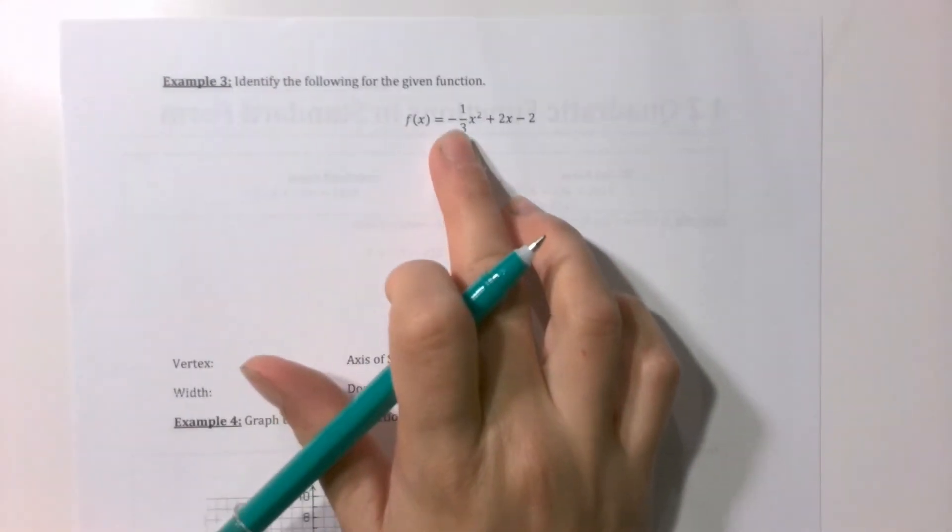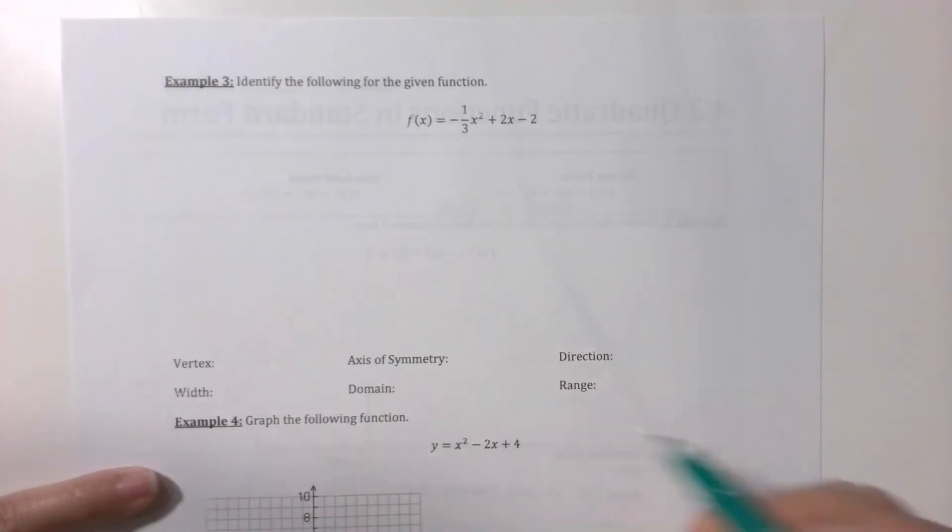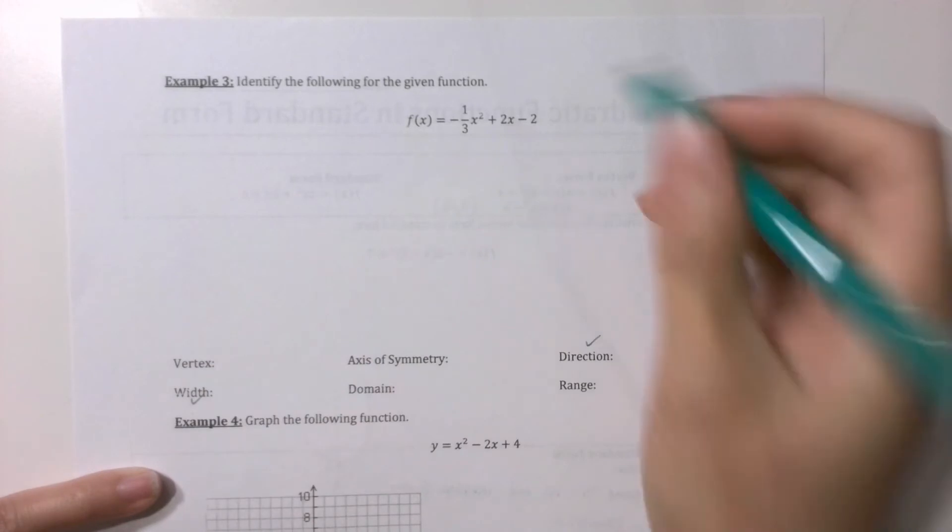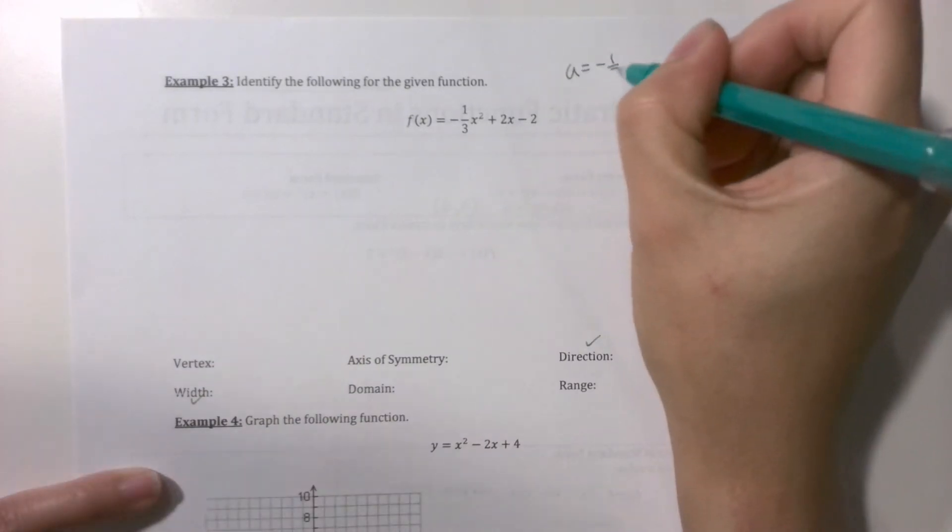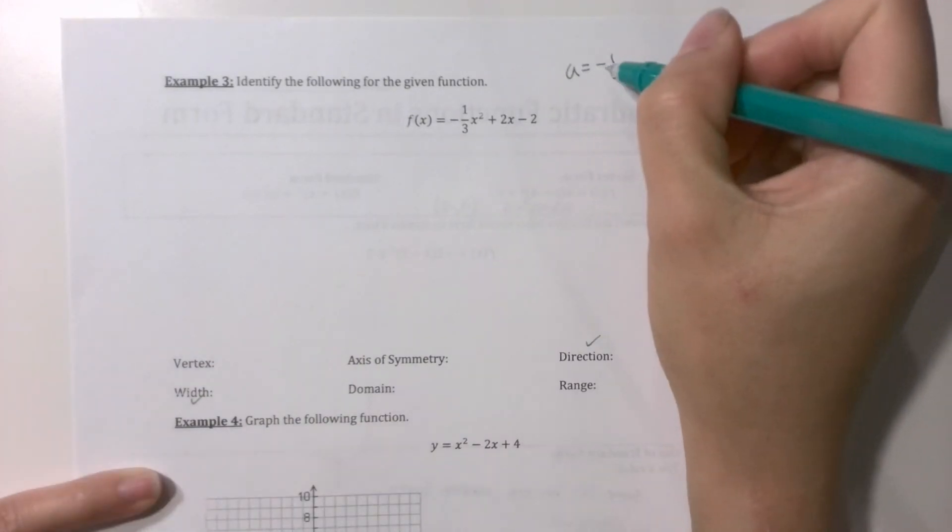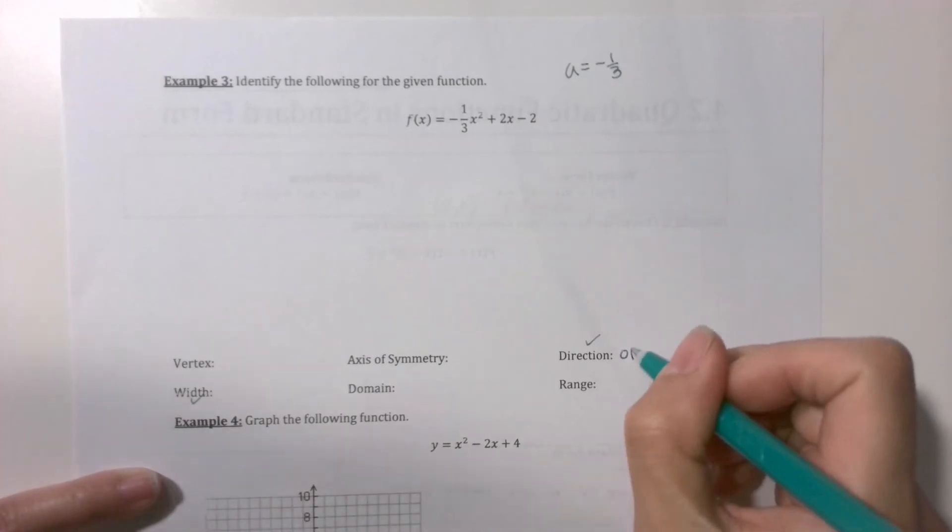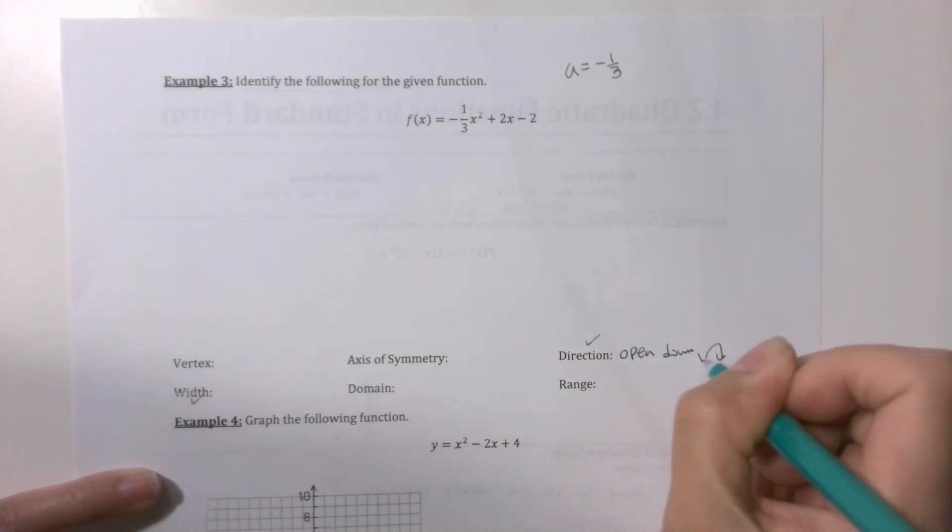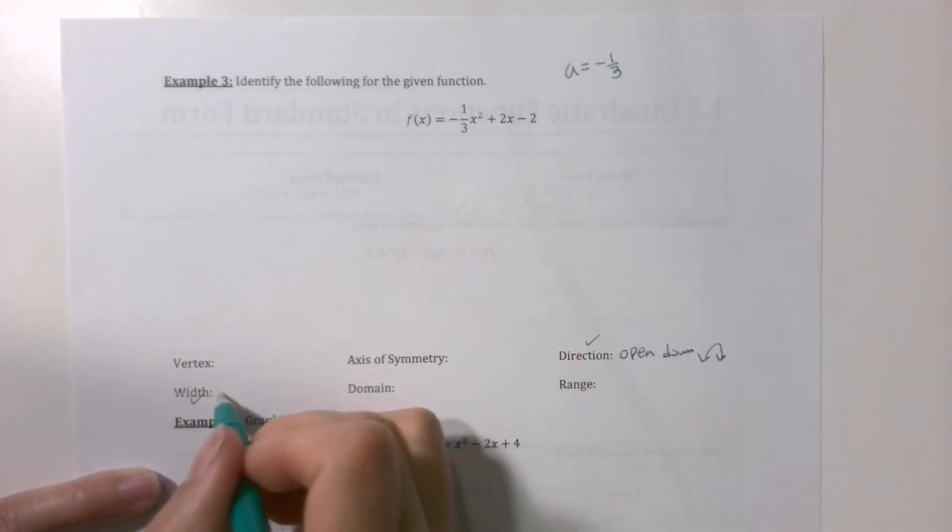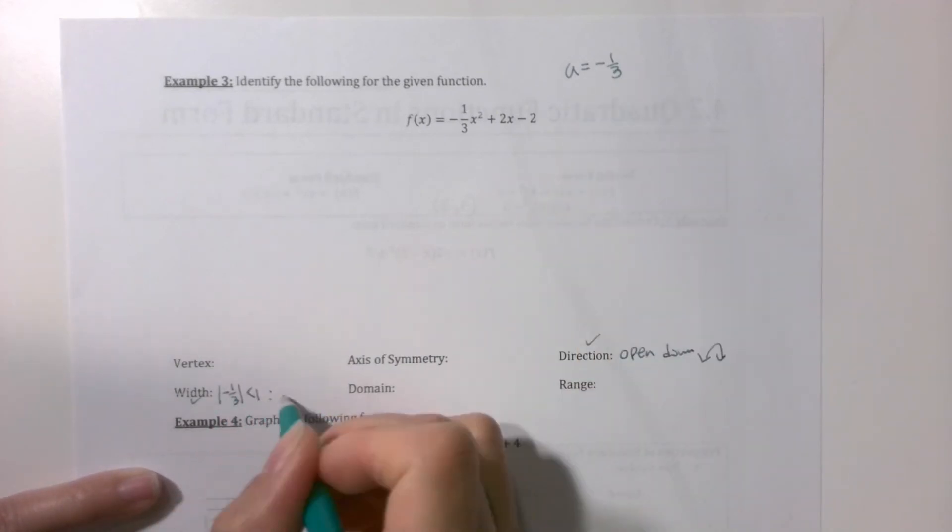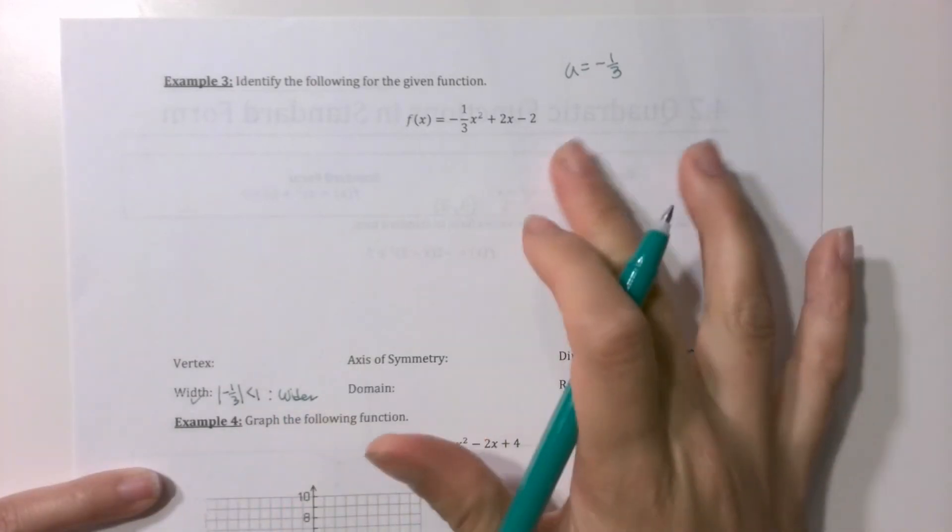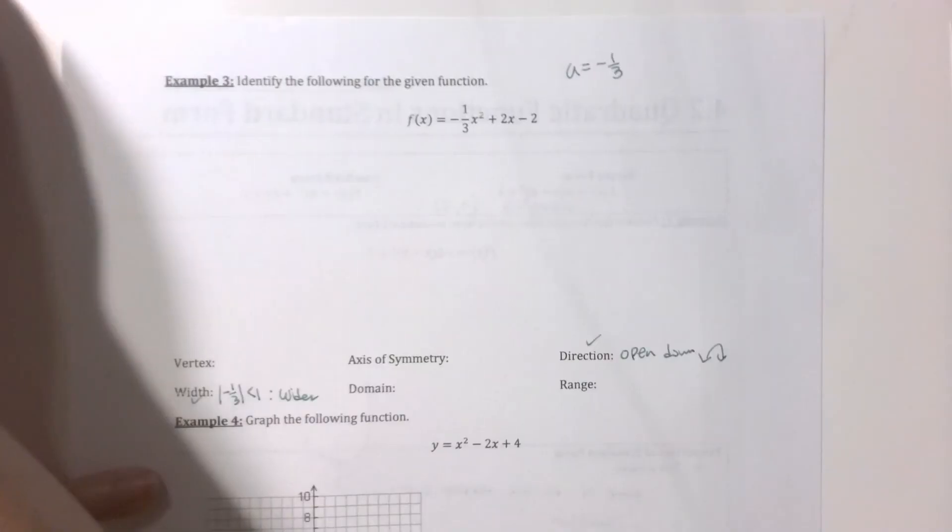There we go. There's my standard form. Let's go find everything. Direction and the width is determined by the a value. What's the a value? A is -1/3. Is it positive or negative? Negative. So opens down like this. Is absolute value of a greater than 1 or less than 1? Less than 1. So it's going to be what? Wider than the parent. So I just knocked two things out just by looking at the a value.